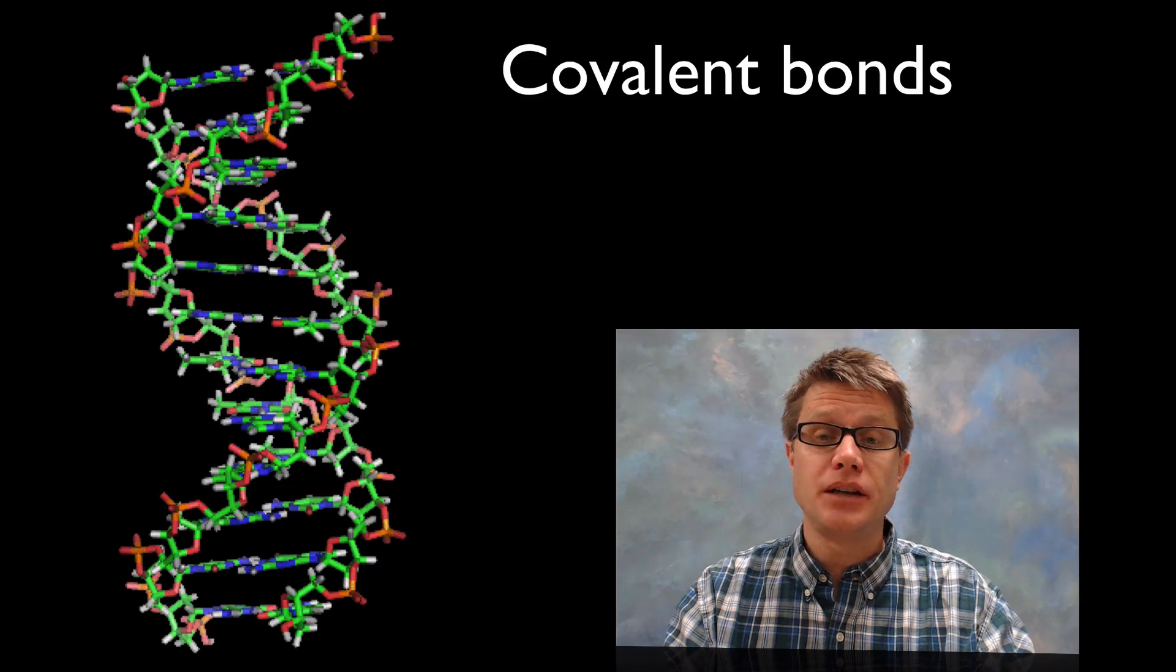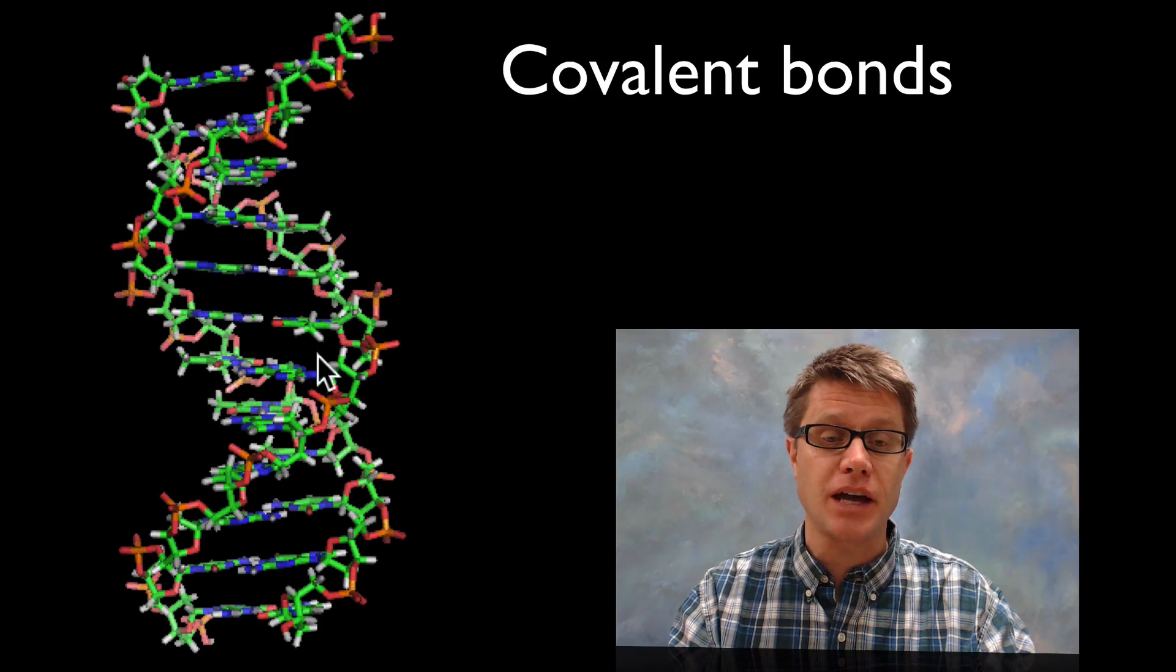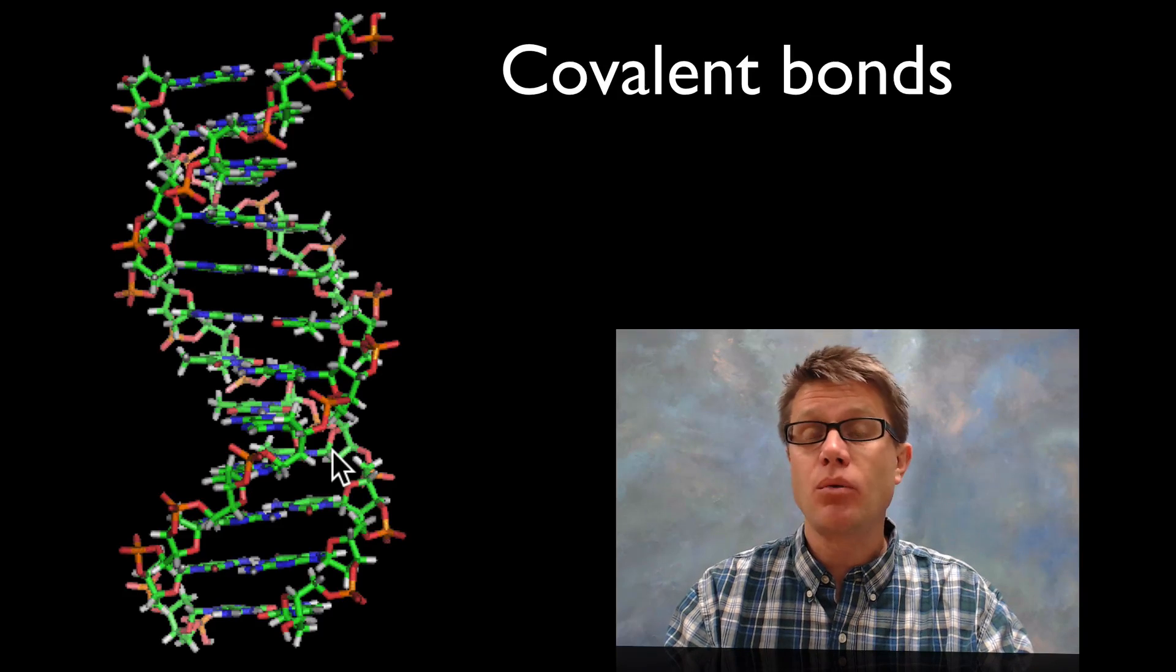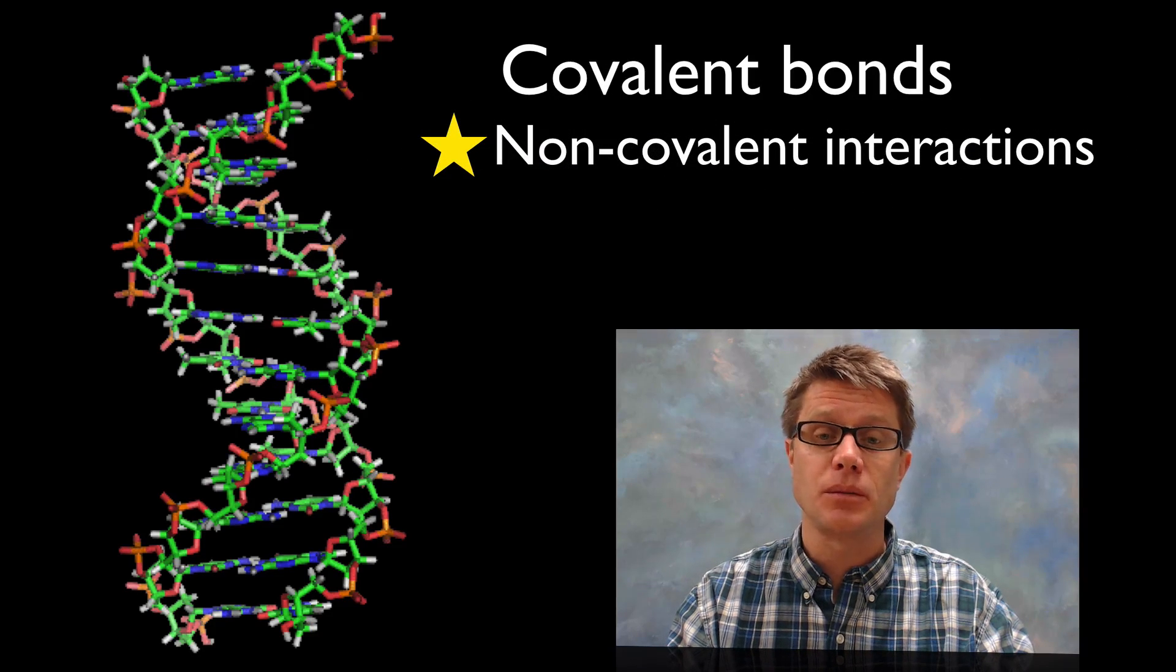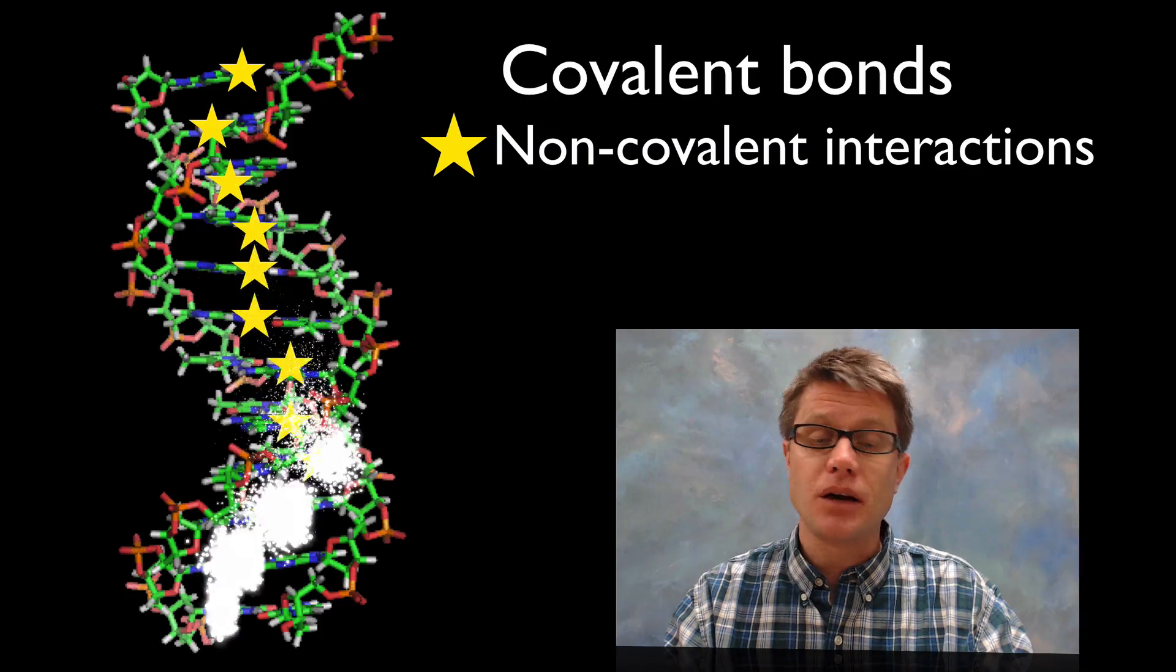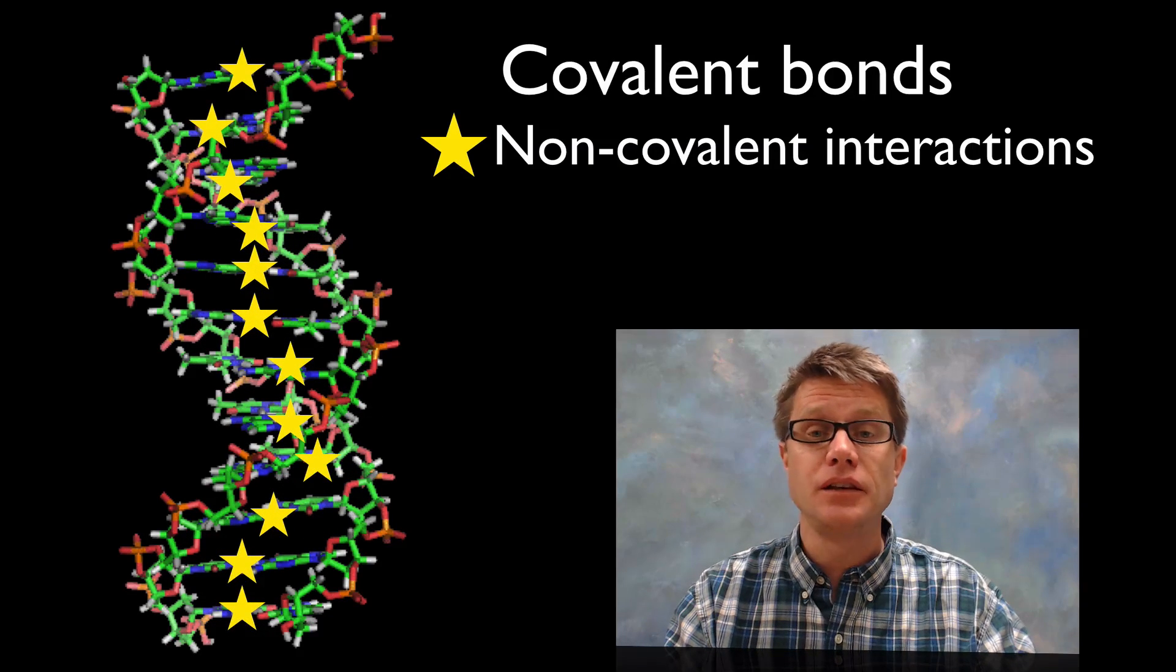So when we look at a molecule like DNA what we're really seeing are the covalent bonds between all of those atoms that give us this structure. But what you don't see are all those non-covalent interactions. And so let me put some of those in with stars here. We're going to have all those hydrogen bonds in the middle that hold those two helices together.